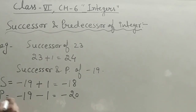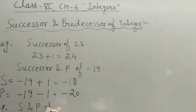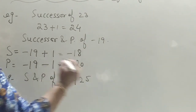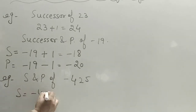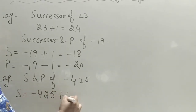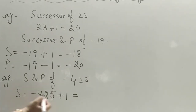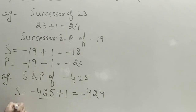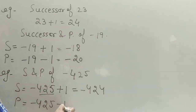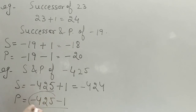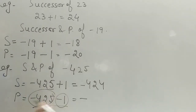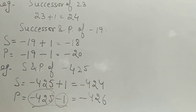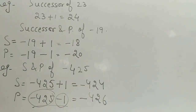Another example: successor and predecessor of minus 425. For the successor, add plus one — applying the same rule, answer is minus 424. For the predecessor, do minus one — both are negative, so answer is minus 426. By this way you can find out the successor and predecessor of any integer.